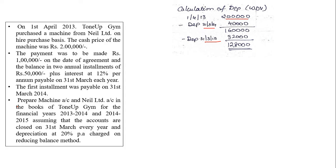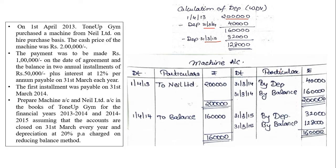Now how to prepare the machinery account. The format is: Date, Particulars, Rupees on both debit and credit sides. In the first year, when you buy a machine or any asset it is always debited to the higher purchase account. So on 1st April 2013: To Neil Account — 2 lakhs. Then on 31st March 2014: By Depreciation — 40,000. We tally and get a closing balance of 1 lakh 60,000. That balance becomes the opening balance for the next year: 1 lakh 60,000. On 31st March 2015: By Depreciation — 32,000. Tally the account, and the closing balance comes to 1 lakh 28,000.